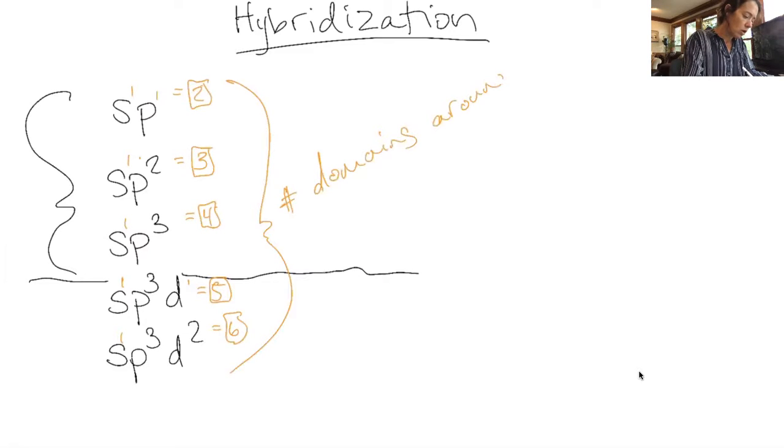All right. So once you draw your structure, you count the domains around the central atom. And once you do that, you know your hybridization, because if there are two domains, it's SP hybridized, three domains, SP two, et cetera. That's simple.